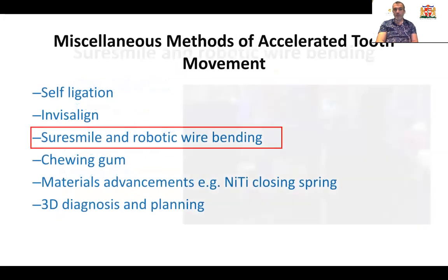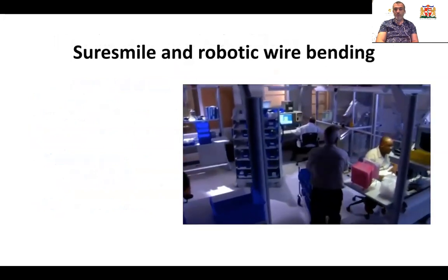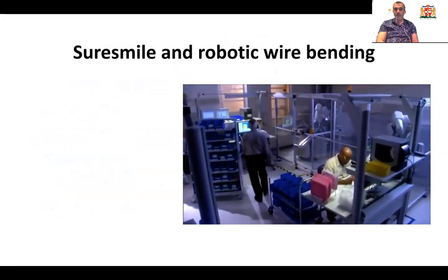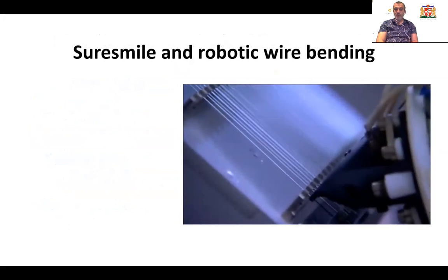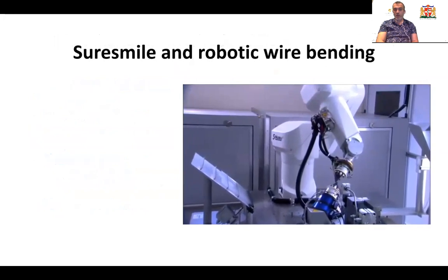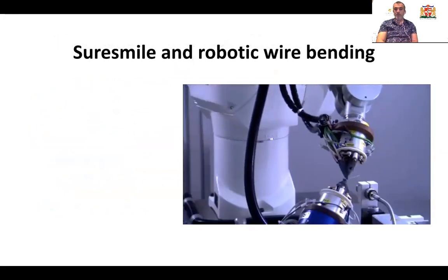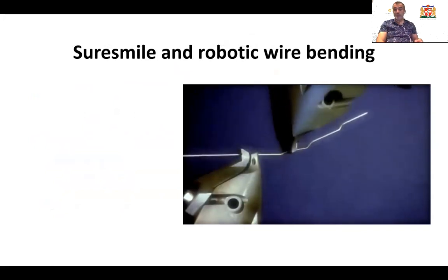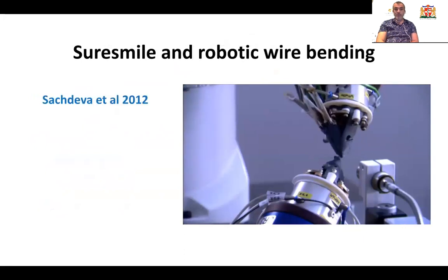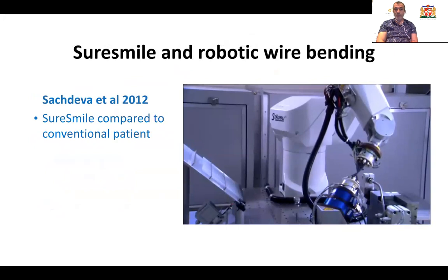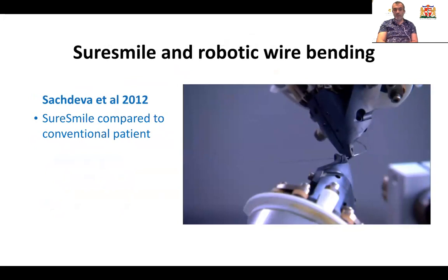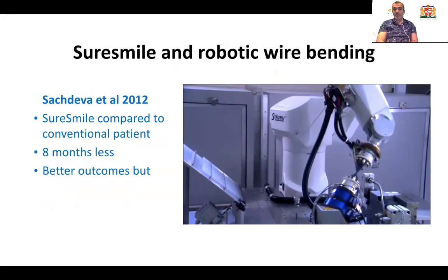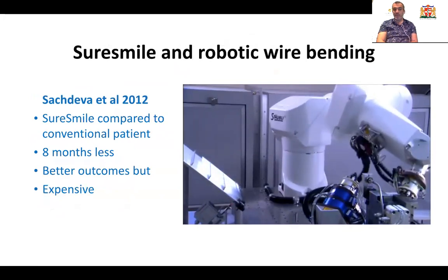What about SureSmile or robotic wire bending? This is a quick video from the SureSmile lab, and as you can see, the robot is doing wire bending of nickel-titanium wires sent to the orthodontist. The belief is that pre-customized wires and appliances will reduce time during finishing, alignment, and space closure. A study in 2012 showed that SureSmile treatment duration is actually 8 months less than conventional fixed appliance. However, it is slightly expensive, and whether you can justify the cost depends on clinician philosophy.